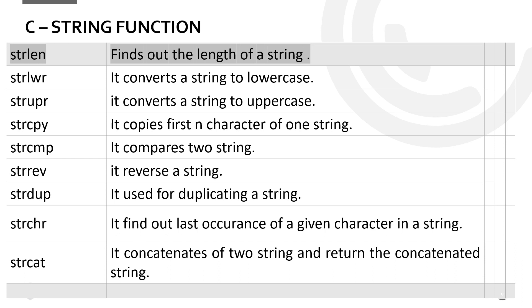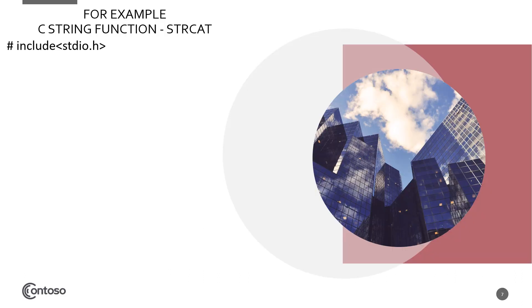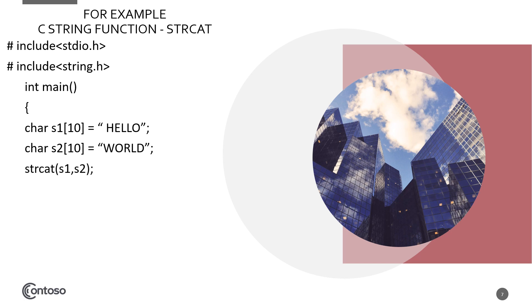Now we will discuss an example by using string function. Here, we are going to discuss an example using strcat which is used for concatenation of a string. Here, include stdio.h for gets and puts, string.h header file is for the string type of variables, int main. Char s1 10 equals hello is the declaration of our string. Char is the type, s1 is the variable, 10 is its size, hello is the string. Char s2 is the second variable, its size is also 10 and world is the string.